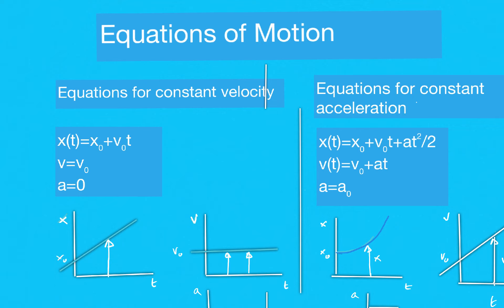With constant acceleration, the change in velocity occurs at a constant rate. This means the velocity as a function of time should be a straight line. The acceleration is some amount different than zero. The position graph is no longer linear — because the velocity is changing, the object is capable of performing more displacement in the same amount of time.